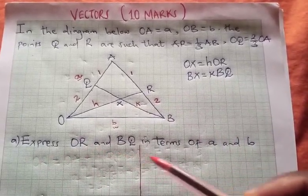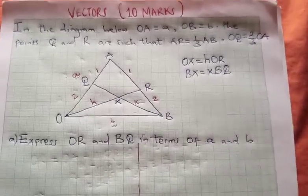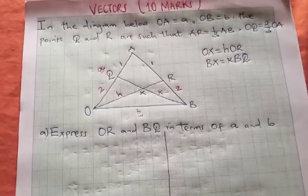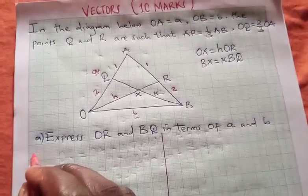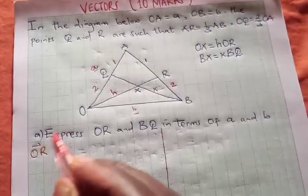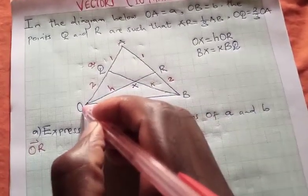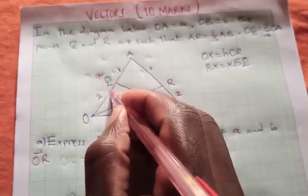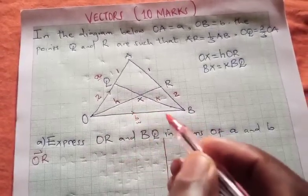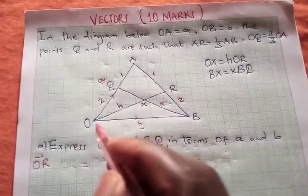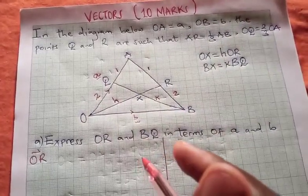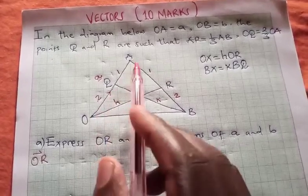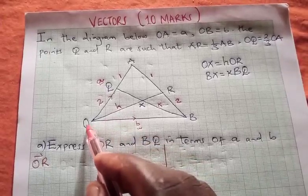So we are going to express OR in terms of vector a and b. Let us start with OR. We are moving from O all the way to R. Remember, O is our origin. It means that this is the starting point and then we will move to other parts. Now the arrow shows the direction. It is important for you to know where you start.